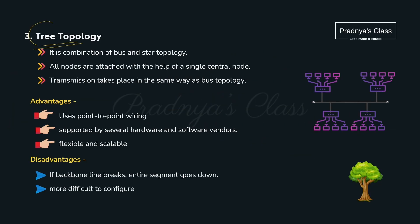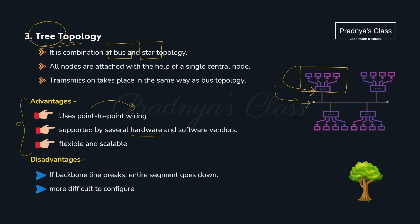The third and last topology is tree topology — a combination of bus and star topology. There is a single transmission path like bus topology, and all devices are connected to a centralized hub. Advantages: uses point-to-point wiring supported by several hardware and software vendors; flexible and scalable. Disadvantages: difficult to configure, and if the backbone line breaks, the entire segment goes down.